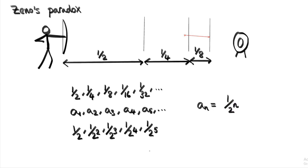Not all sequences can be expressed so neatly. So far our notation has given us a way to refer to every term in the sequence and figure out its value. But if we want to talk about the sequence as a whole, we need some way of representing it. We do that by putting brackets around the term aₙ. So in this case this doesn't represent a single term — it represents the whole sequence, all numbers within the sequence. This symbolic representation provides a shorthand for talking about it quickly.